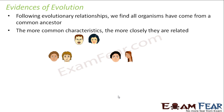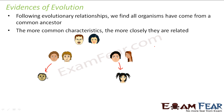Now these brothers get married and give birth to kids. This guy gave birth to a daughter, this guy gave birth to a son. This kid has inherited some properties from father and some from mother — he has got curly hair similar to his mother. This girl also got some characteristics of father and some of mother. Now if you compare this guy and this girl, they have got more differences than the two brothers. When you compare the brothers, they were very similar to each other, but when you compare these two cousins, their similarities have decreased.